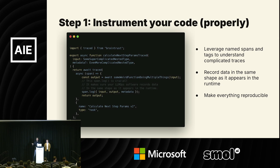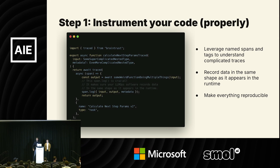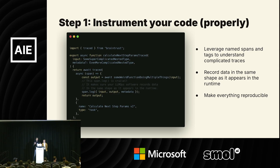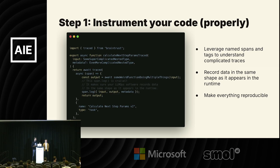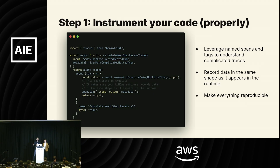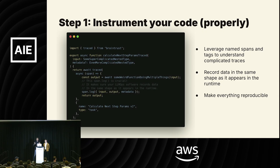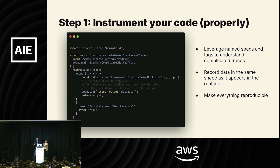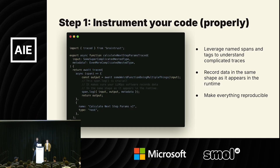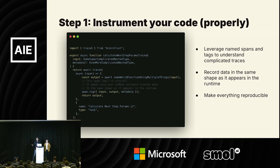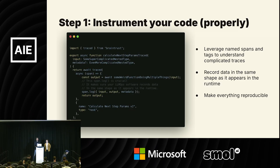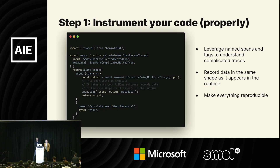You also want to strive to make the run repeatable for eval purposes. If you log data in the same shape as it appears at runtime, it makes it much easier to convert it to an eval run later, because you can prepopulate the inputs and expected outputs directly from your trace for free. This is especially useful for tool calls — if a tool call produces side effects, you probably want to mock those in your evals, and you get all that for free if you're recording them in your trace.